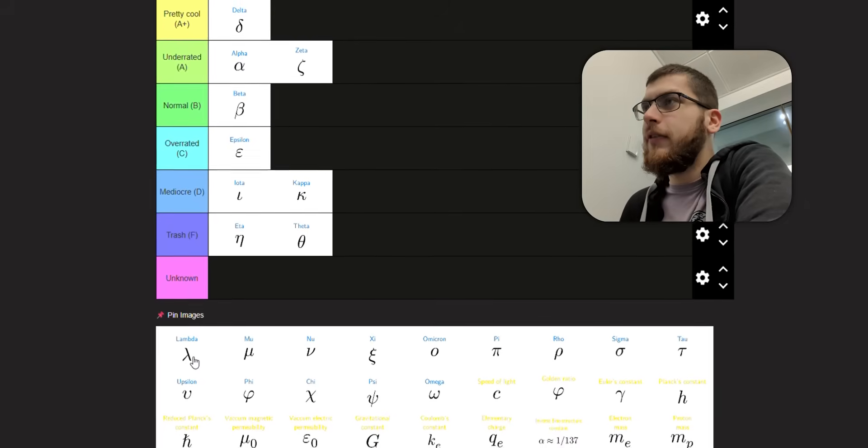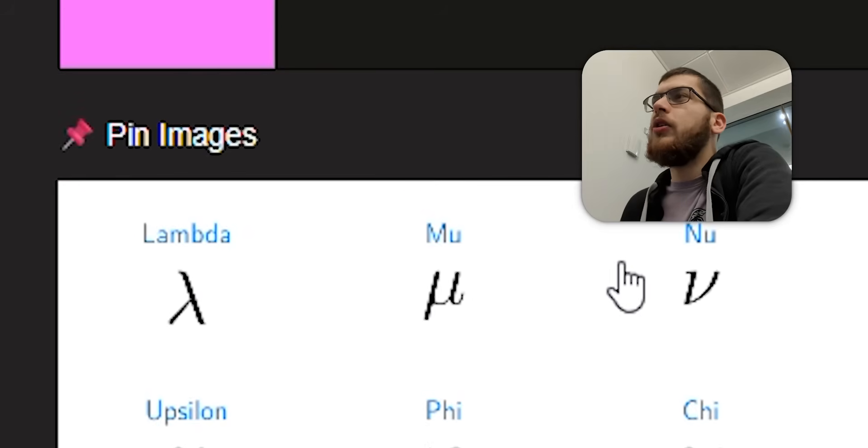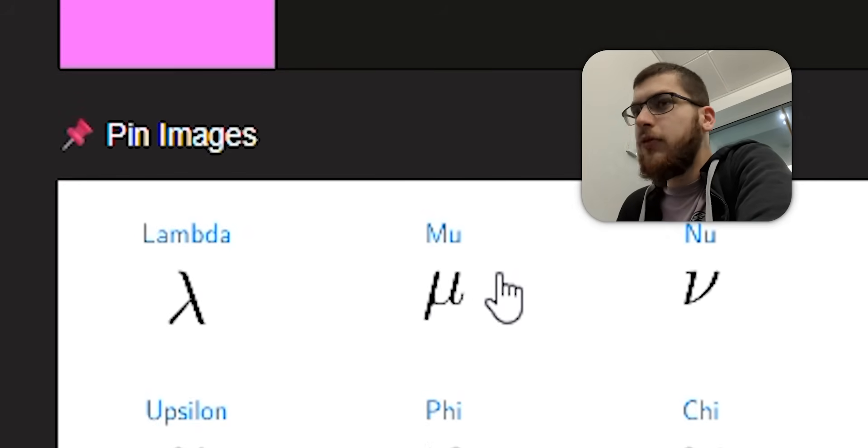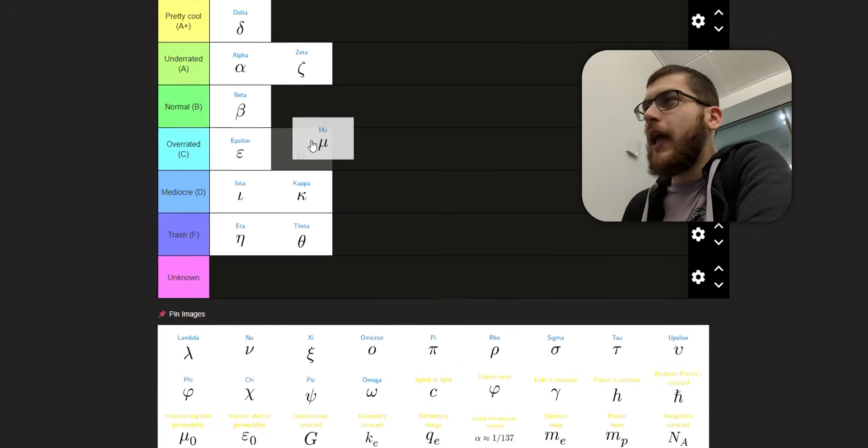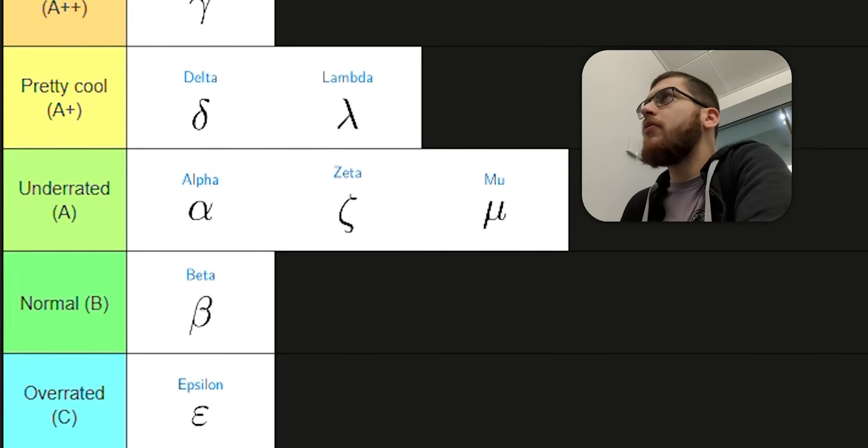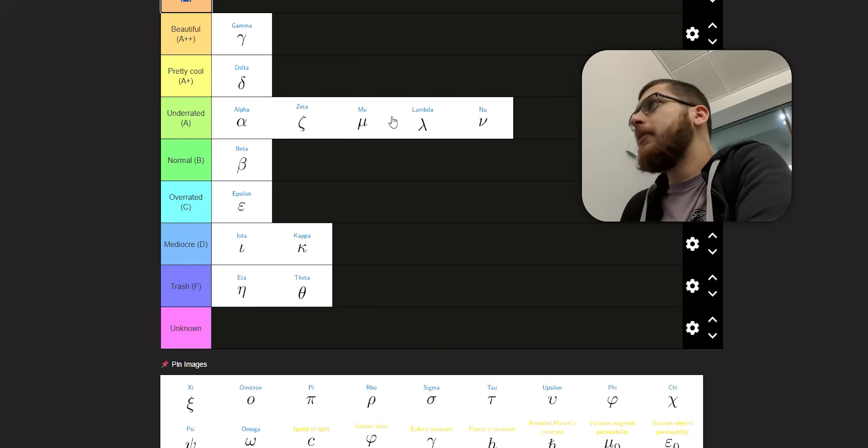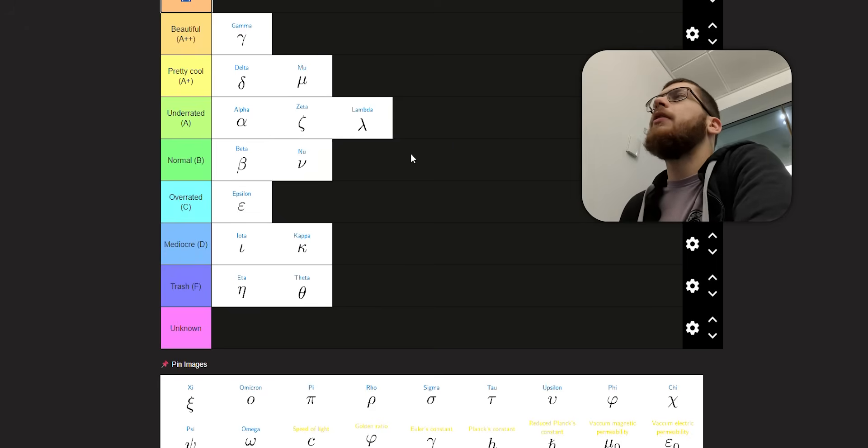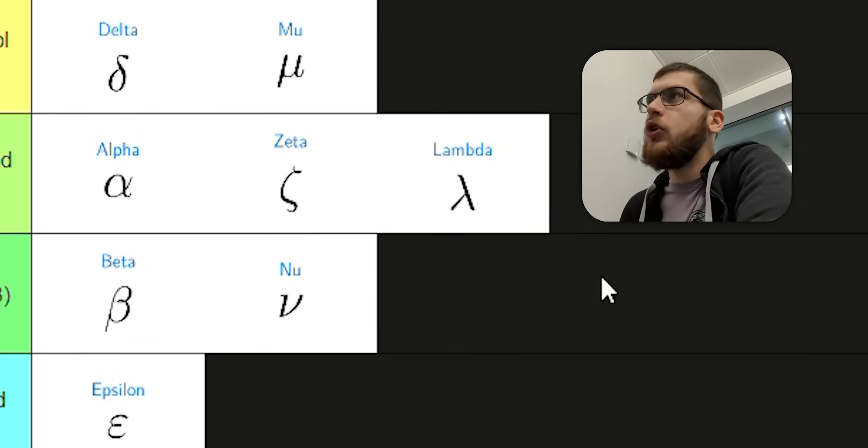Lambda. This one is used for length, wavelength. It's used in physics for lambda, mu, and nu. These three symbols are used together in like physical mechanics equations. I like these three letters. I would put them in A. Mu's my favorite. Nu's not so good because it looks like a V, looks like a broken V.